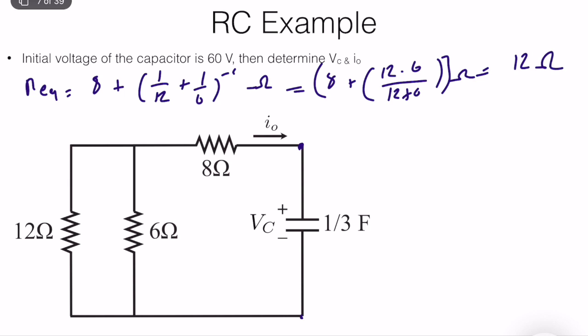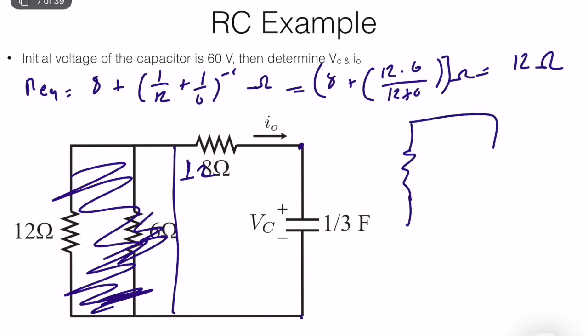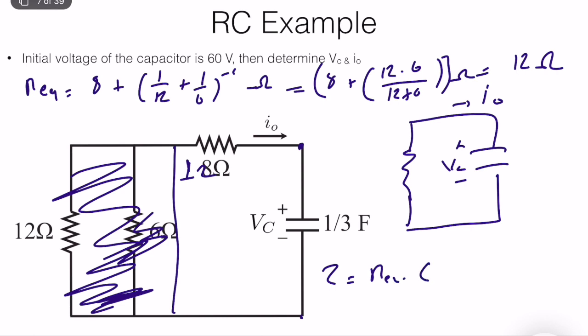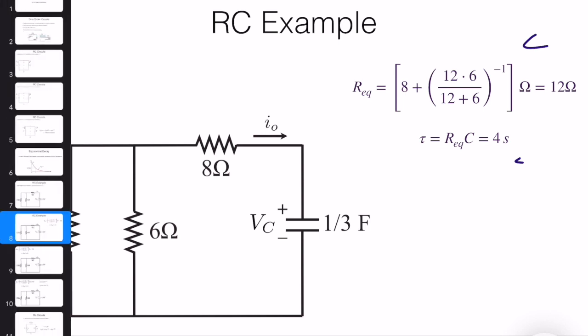So technically I can ignore everything and replace it with a 12-ohm resistor in a simple RC circuit with plus-minus VC and IO. As you can see, IO is technically equal to the capacitor current. Now we need to compute the time constant: tau equals R_eq times C equals 12 times 1/3 equals 4 seconds.